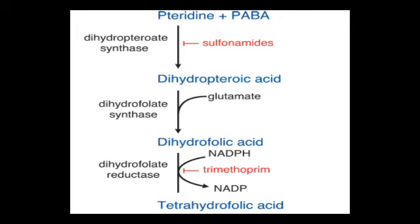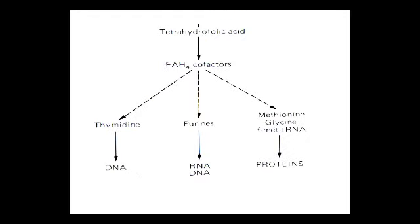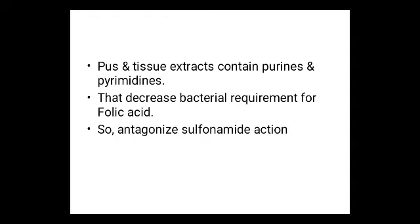In the folic acid pathway, pteridine and para-aminobenzoic acid combine to form dihydropteroic acid by dihydropteroate synthase. This conjugates with glutamate to form dihydrofolic acid, which is converted to tetrahydrofolic acid by dihydrofolate reductase. Tetrahydrofolic acid is utilized for DNA synthesis. Pus and tissue extracts contain purines and pyrimidines that decrease the bacterial requirement for folic acid, thereby antagonizing sulfonamide action.